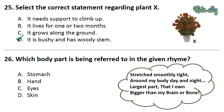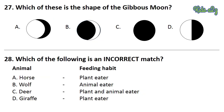Question 26: Which body part is being referred to in the given rhyme? Please pause the video and read the rhyme. The answer is Option D — Skin. Question 27: Which of these is the shape of the gibbous moon? The answer is Option A. Question 28: Which of the following is an incorrect match? The answer is Option D.